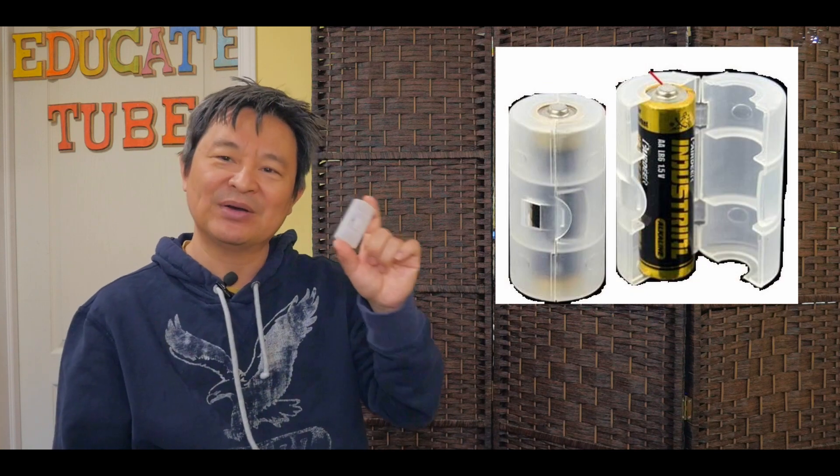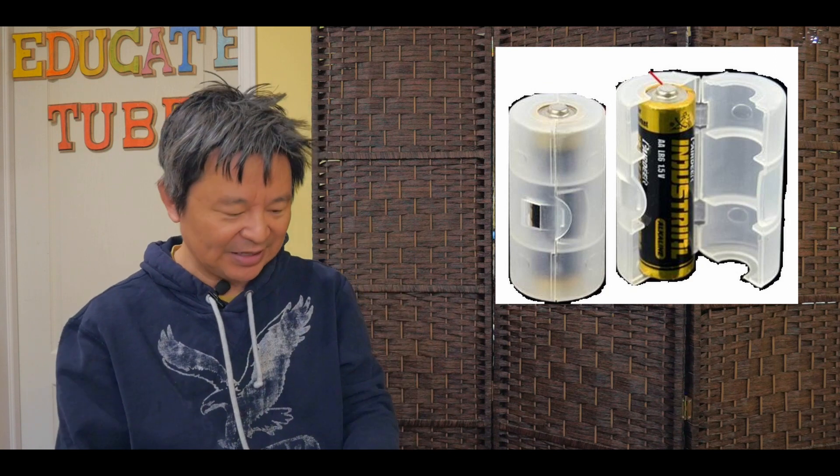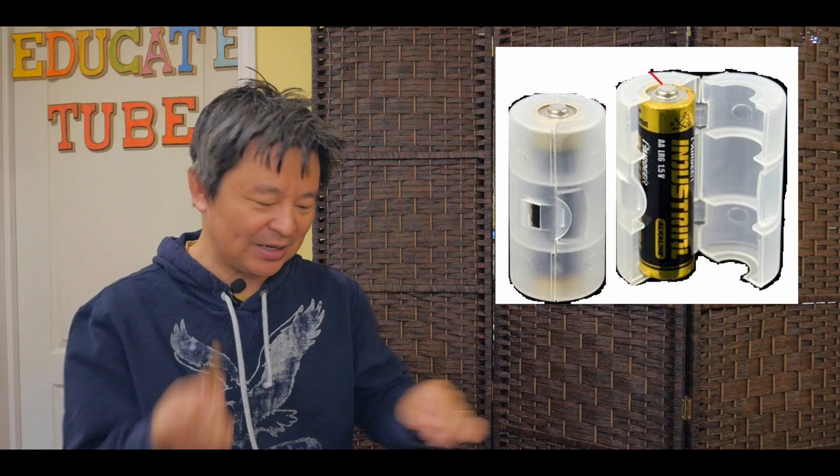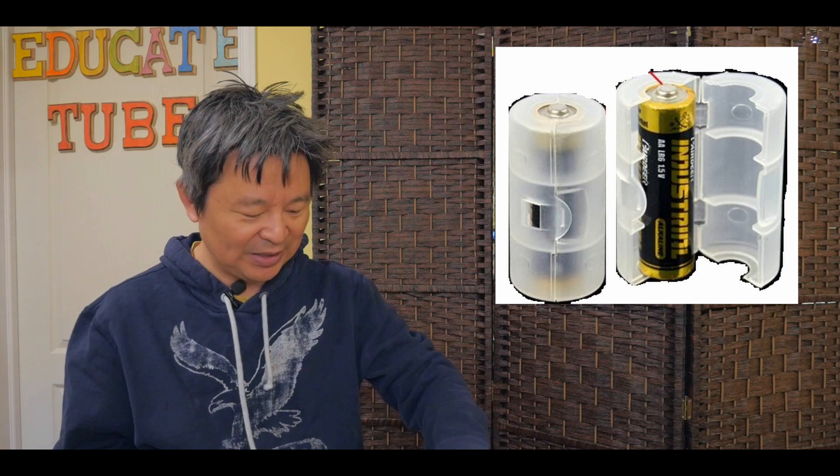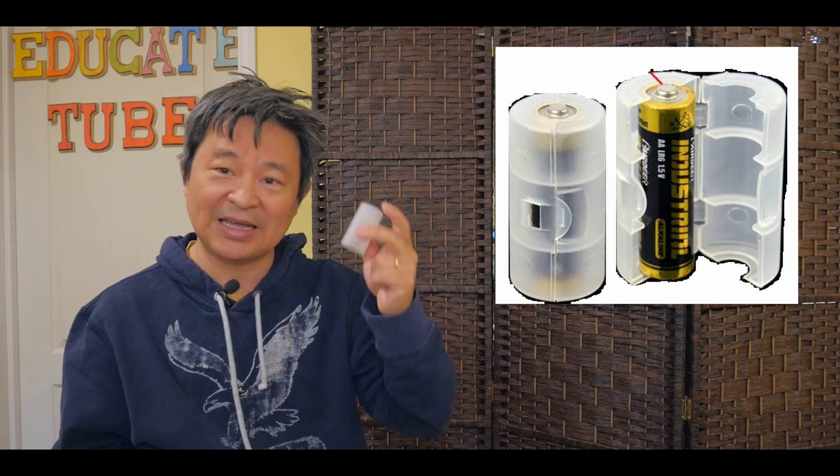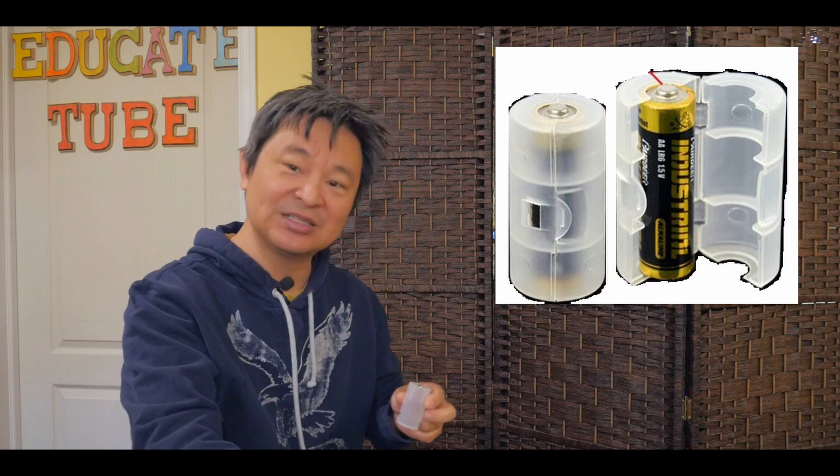What you could do is buy one of these plastic battery holder converter casings. You can take a AAA battery, convert that into an AA battery, and then put it into a C or D casing, and you should be able to power your flashlight. Let me illustrate.